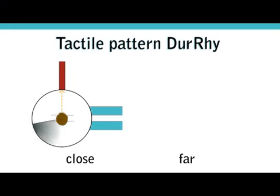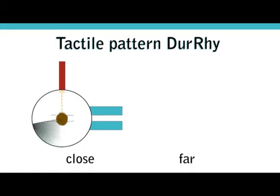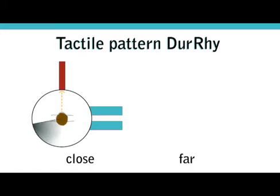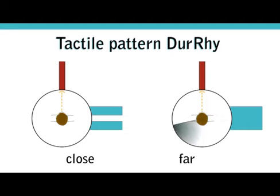The second pattern uses the overall duration of vibrations to distinguish directions, while the number of pulses shows the distance, where more pulses indicate a closer turn.